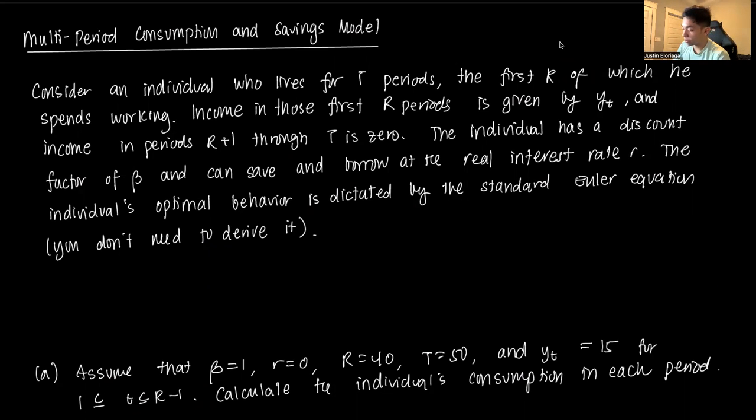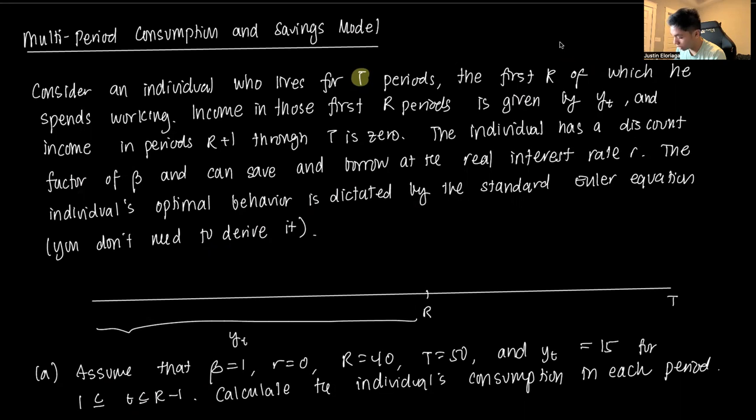Consider an individual who lives for T periods - that's their total lifespan. The first R periods they spend working, and in each of those periods they receive an income of YT.